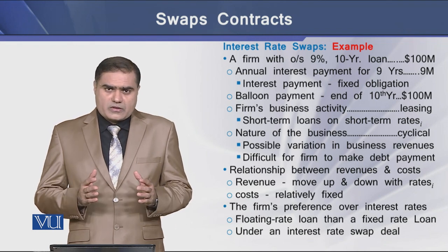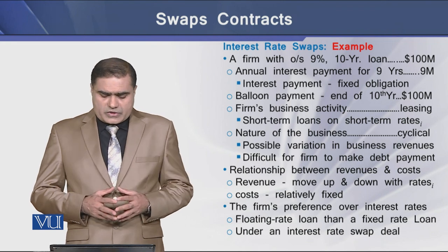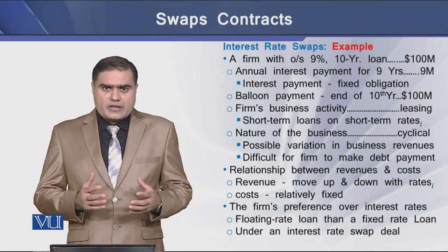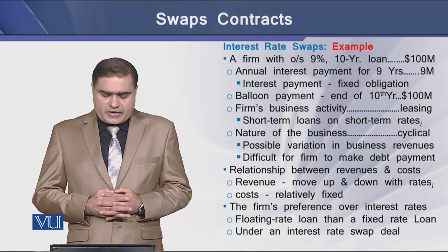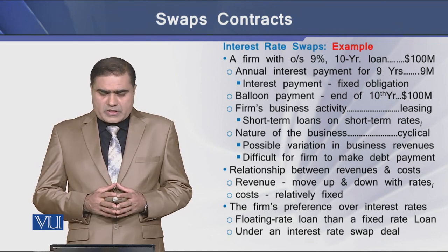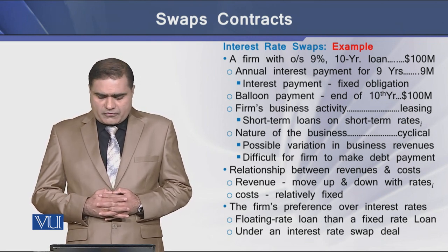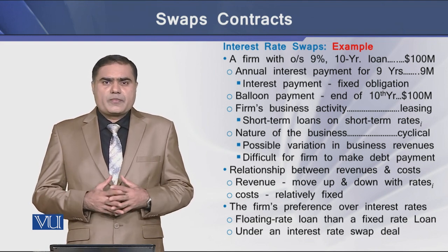Here we see the relationship between the firm's revenues and its costs. The revenues of the firm are moving in line with the interest rates in the market, whereas the costs of the firm are relatively fixed. So the firm's preference will naturally be to have a floating rate loan rather than a fixed interest rate loan under an interest rate swap contract.